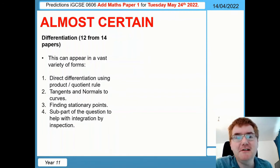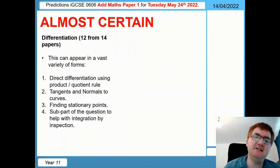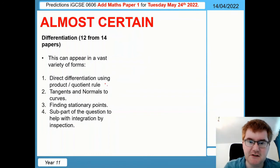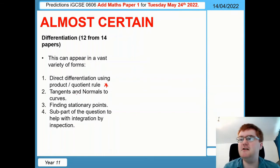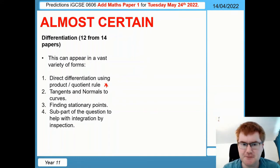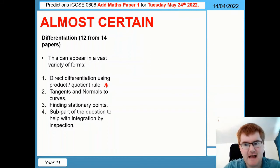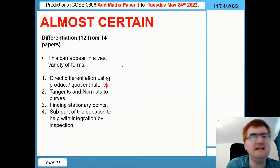Differentiation. Again, this should not be a surprise to you in the slightest - it comes up in the almost certain category. I've tried to break this down to categories where differentiation appears. The first one is direct differentiation using the product rule and quotient rule, so you need to know how to use both of those. Number two, which comes up reasonably often, is tangents and normals to curves - so differentiating, find the gradient at a specific point, and then using some coordinate geometry. Finding stationary points - so maxima, minima - doing single differentiation, double differentiation, and working out whether they are maxima, minima, or points of inflection. And then sometimes they do it as a sub part of the question, so you get to do some differentiation and that will help you to do some integration by inspection a bit later on at the end of the question.